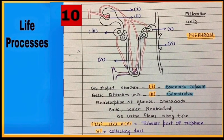Functional unit of kidney is nephron. It has cup-shaped structure called Bowman's capsule, inside which a network of capillaries is present called glomerulus which filters blood.